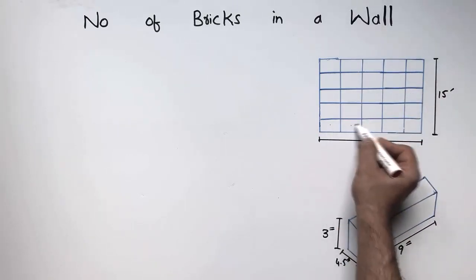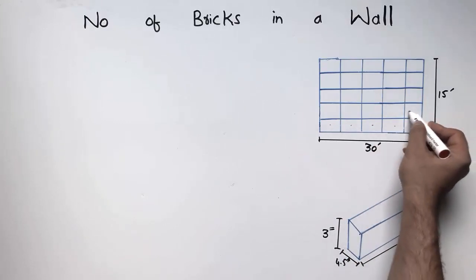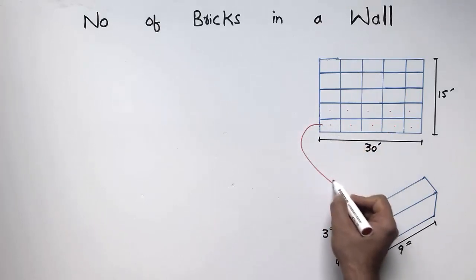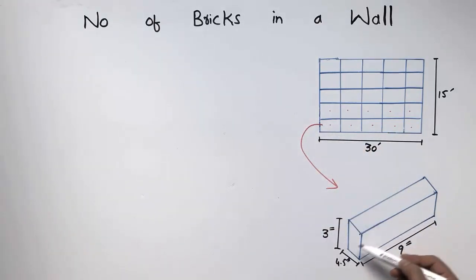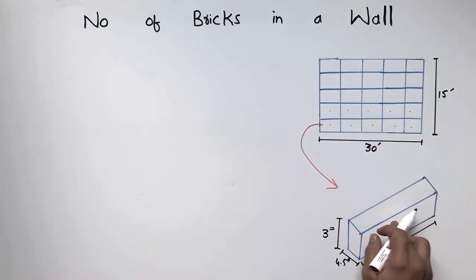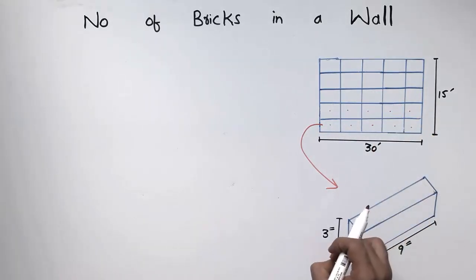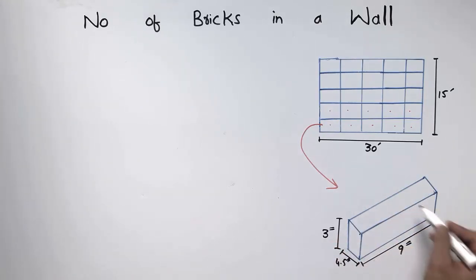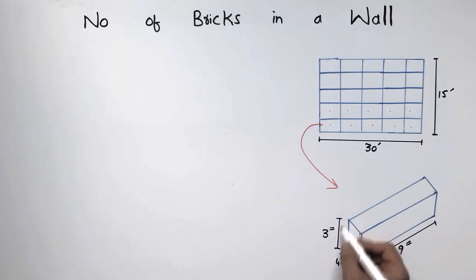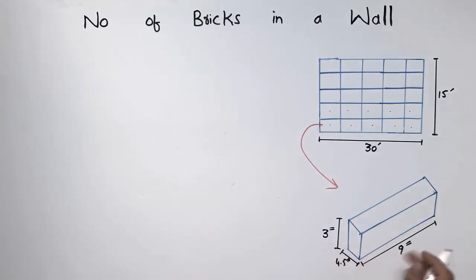These square boxes represent the bricks in this wall, and the detail view of these bricks is shown in this image. This brick changes according to different countries. For example, in India, the length of the brick is 9 inches, the width is 4.5 inches, and the height is 3 inches. However, these brick dimensions can change depending on the location.